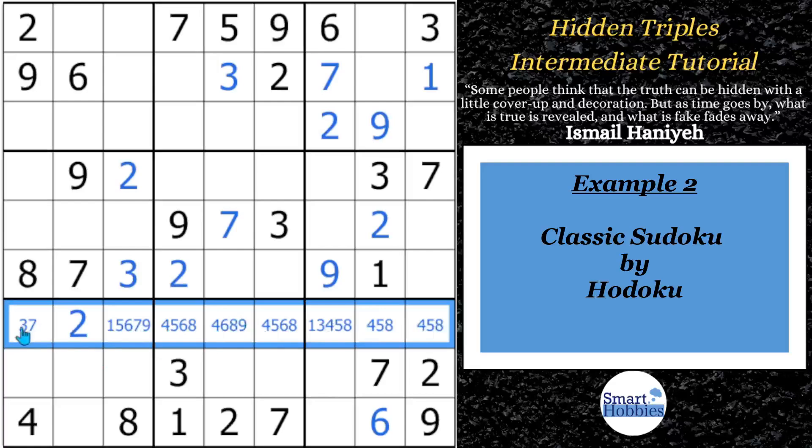You want to look here and there's a hidden triple in this row. Now, what you might look at is you could go right here and look at these five cells and go, those five cells contain the digits 4, 5, 6, 8, and 9. Those are the only five digits that would be in those five cells. And we can highlight that in yellow.